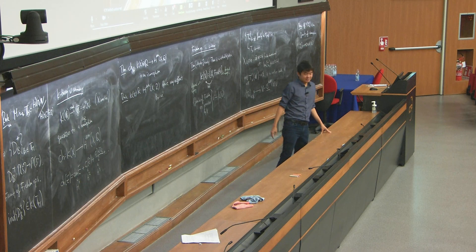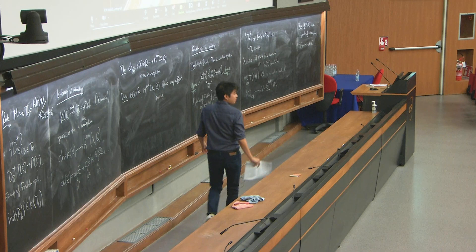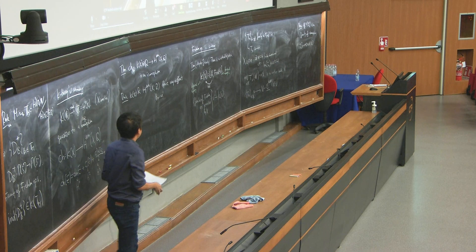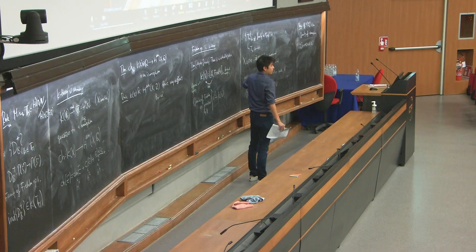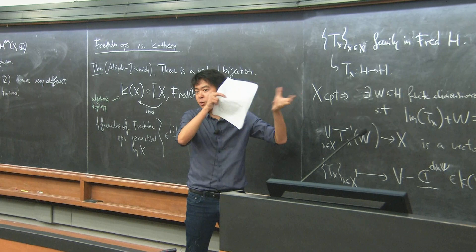The key point behind the proof — which I swept under the rug — is Kuiper's theorem: the unitary group of an infinite-dimensional Hilbert space is contractible. So there's no interesting topology if you look at Hilbert bundles in that sense, which is what makes the bijection work.